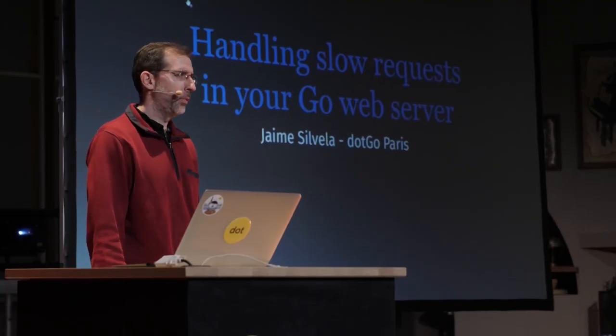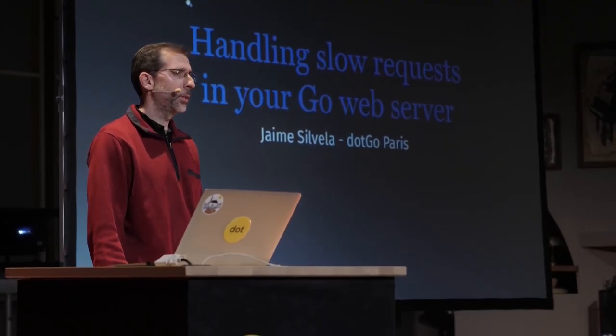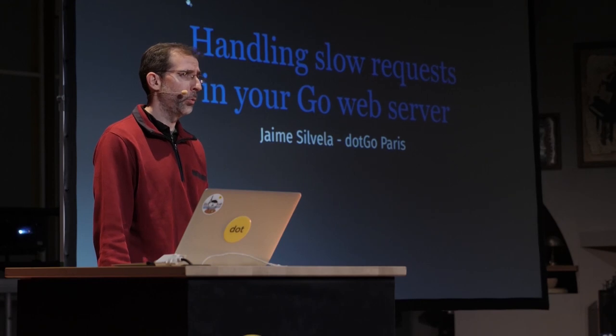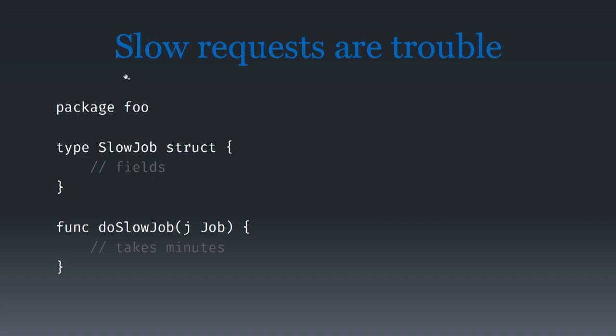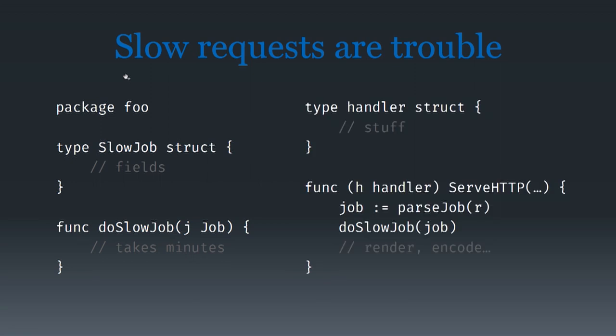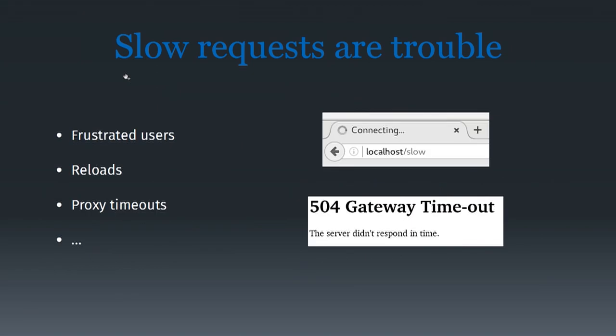Go is a great language to build web servers with, but we still have a problem with slow web requests. If we have this package containing a slow job structure that takes about 10 minutes to process, and we build our handler the usual way — plain — we know we're in for trouble. Users are going to get frustrated, hit the reload button, think it's broken, and we're going to have proxy timeouts.